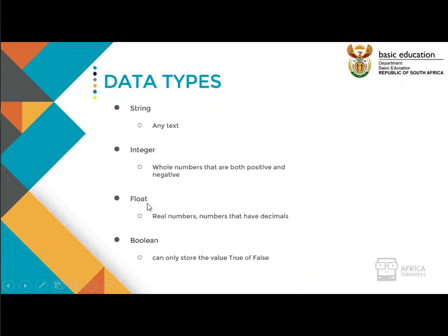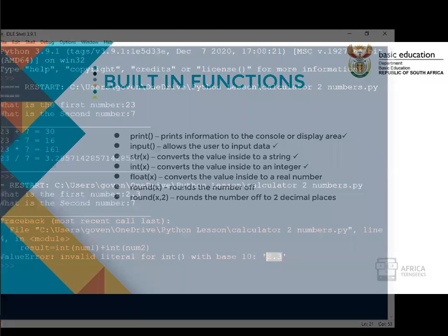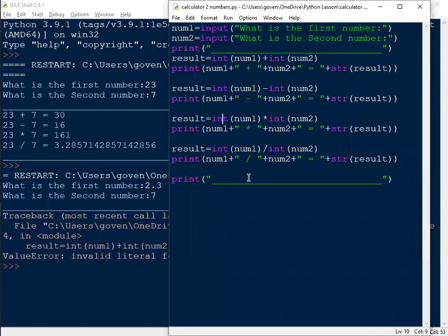Let's go back to the float function. Looking at the built-in functions we've done so far — print, input, str, and int — here's float. We use it as float(x), where inside the round brackets we put what must be converted to a float. This converts the value inside to a real number. Going back to my program, I can now use real numbers for addition, subtraction, multiplication, and division by simply replacing int with float.